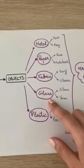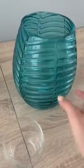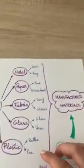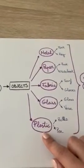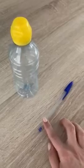Another material is glass. Some things that are made of glass are, for example, a glass or a vase. And the last material is plastic. We can find plastic in bottles or in pens.